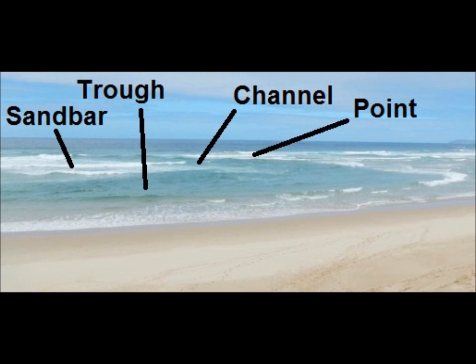The waves would break on the bar and reform over the trough, resulting in small shore break along the trough. The same waves would probably not break at all as they rolled into the channel, unless a strong rip current was present, and would break much more energetically near the shore. Other waves would break on the tip of the point, progressively widening as they become spilling breakers approaching the shore, and eventually nothing but wash. The channel and the trough would be where I would focus my attention.